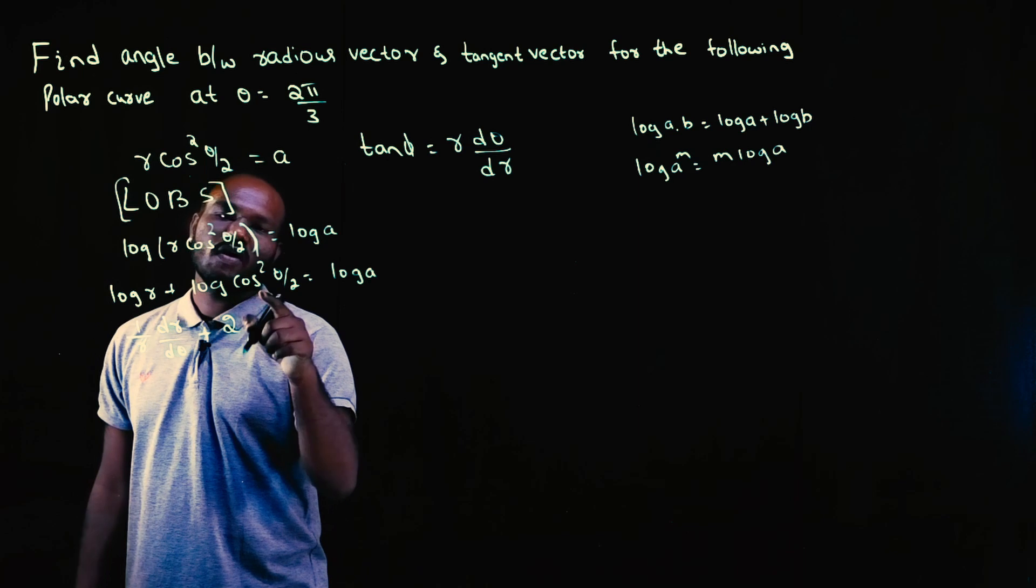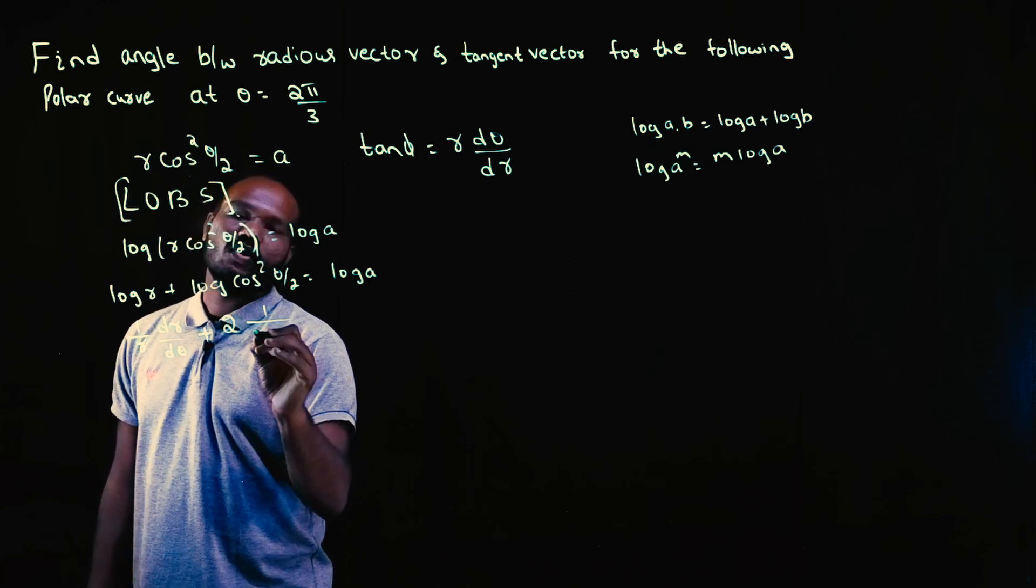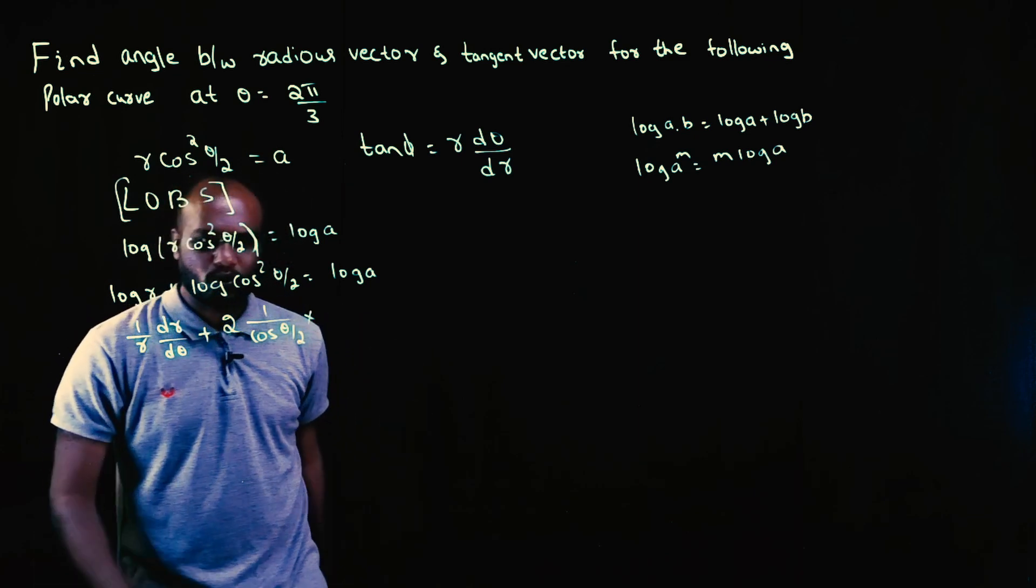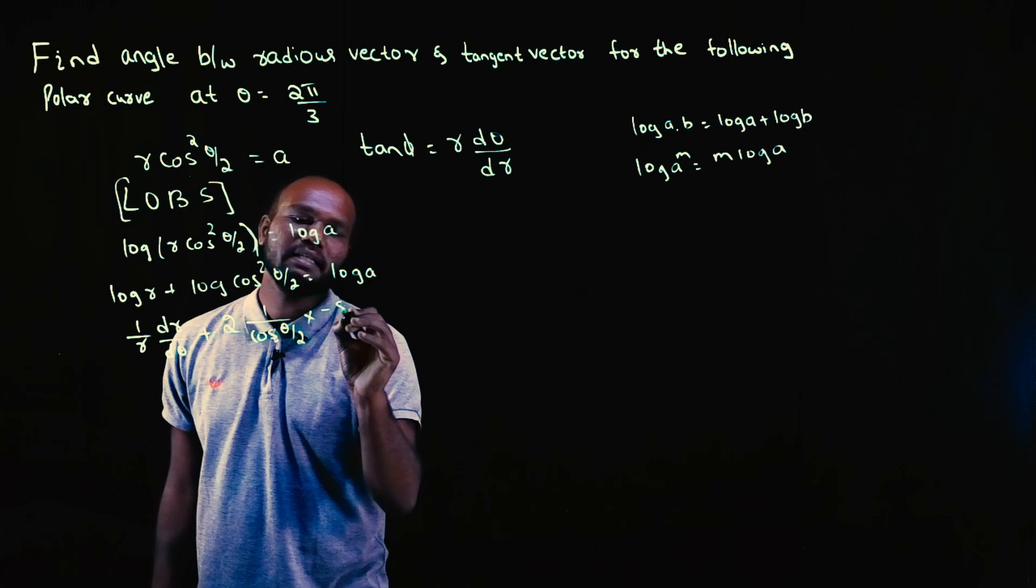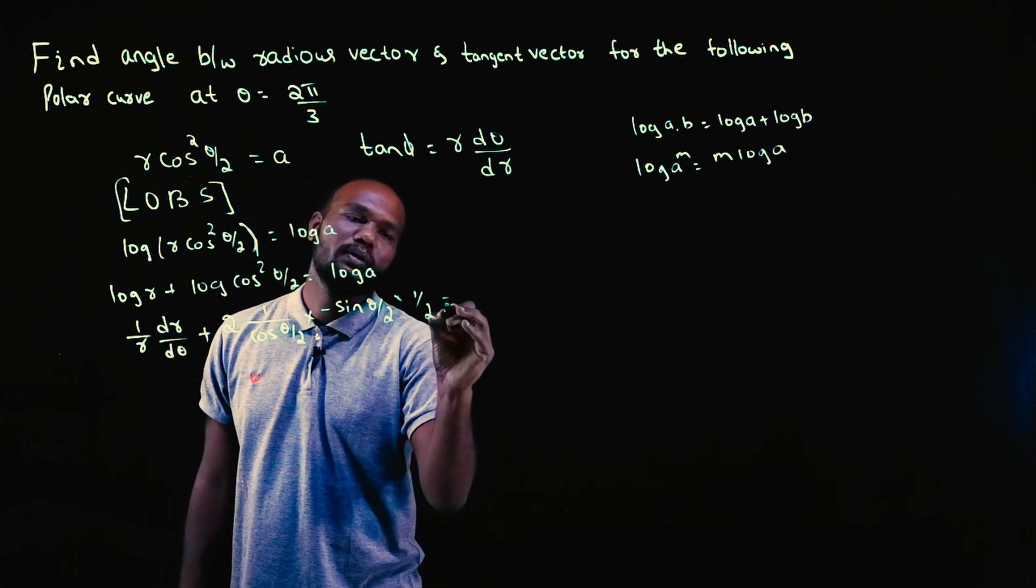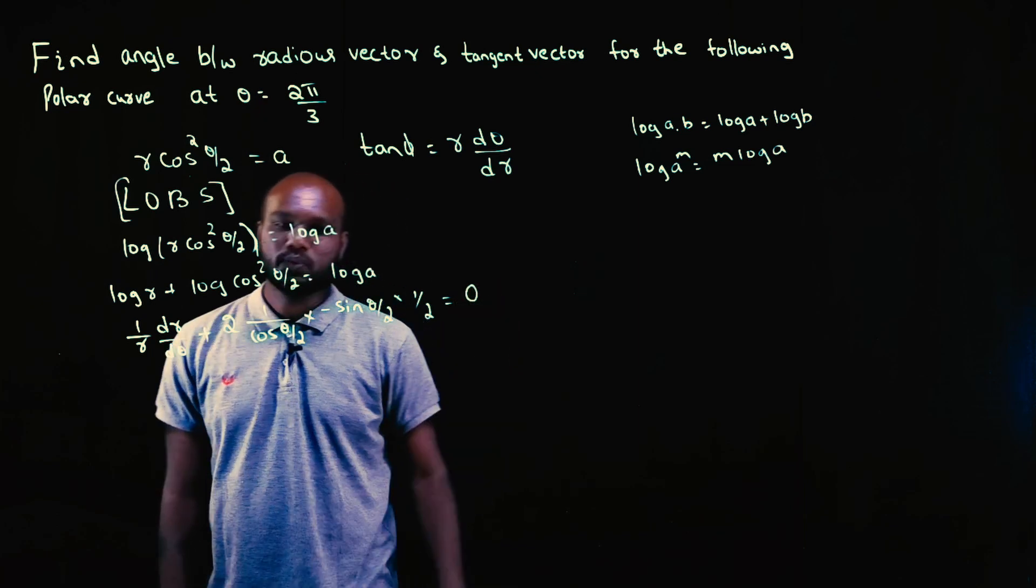Log cos theta differentiation is what? 1 by cos theta by 2 into cos differentiation is minus sine theta by 2. Theta by 2 differentiation is 1 by 2 is equal to, A is a number. Log A is also a number. So log A differentiation is 0.